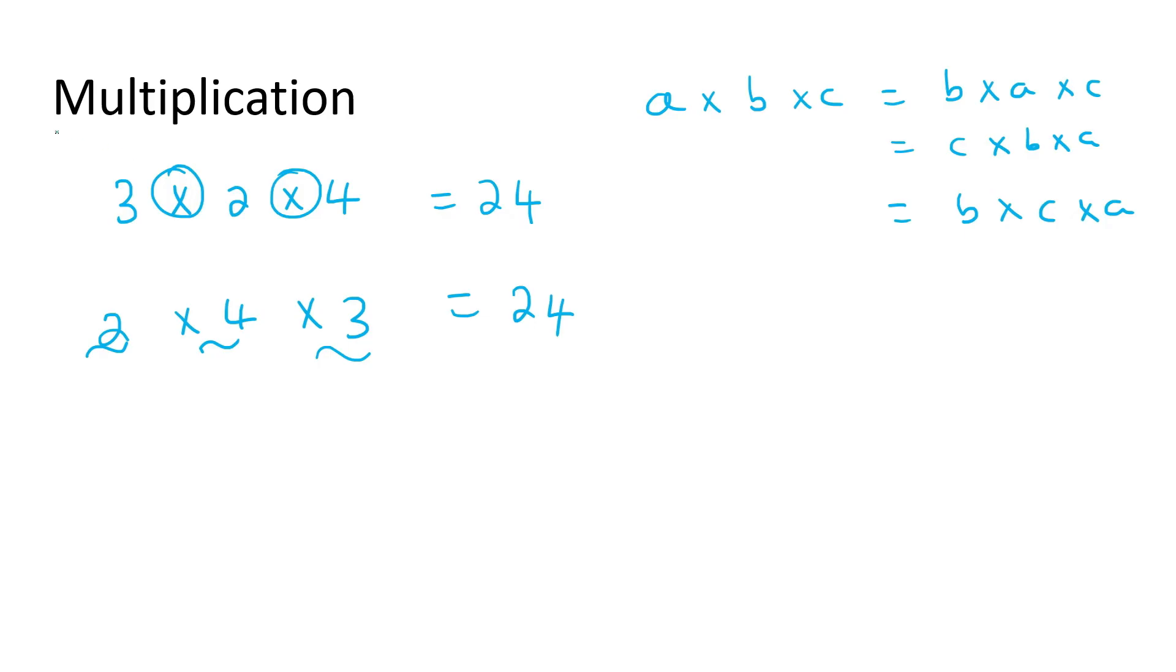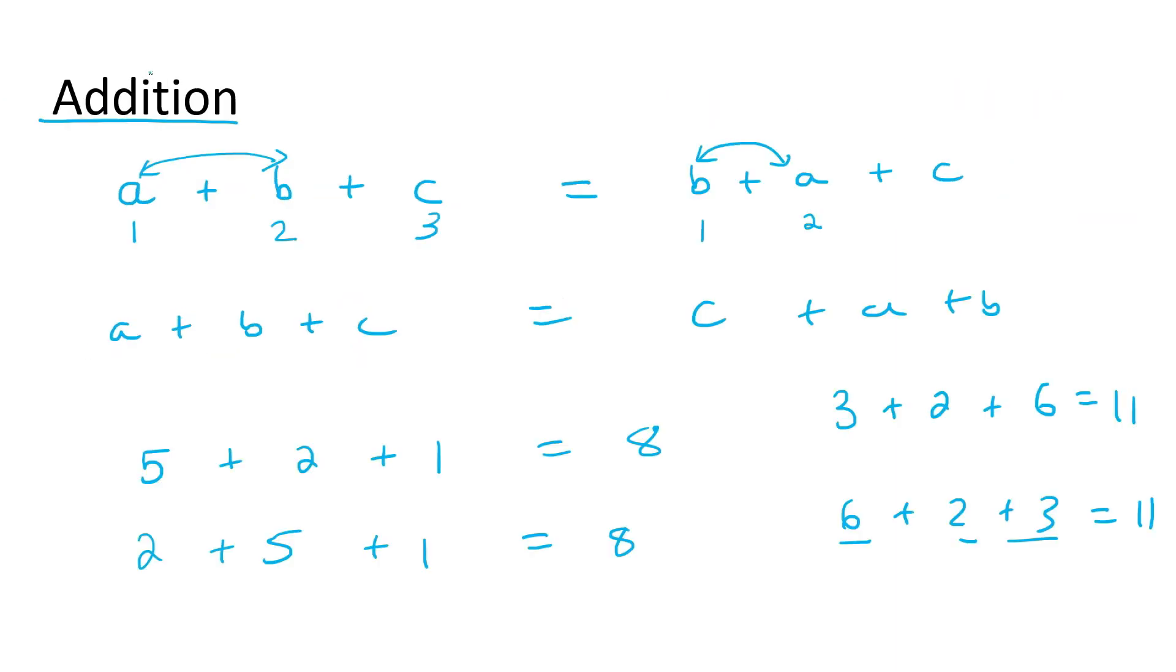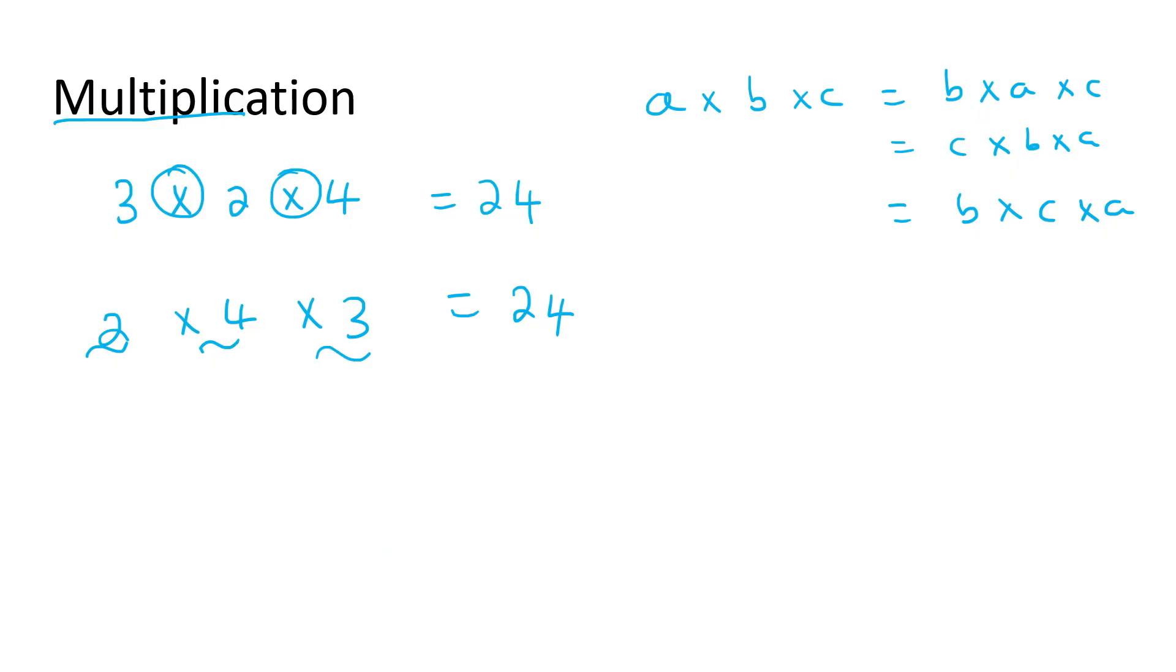Now this is called the commutative property of multiplication, whereas on the previous slide we looked at the commutative property of addition. So it's a mathematical thing, and it means that whether you're doing multiplication or addition, if you move the numbers around, the answer will still be the same. Okay.